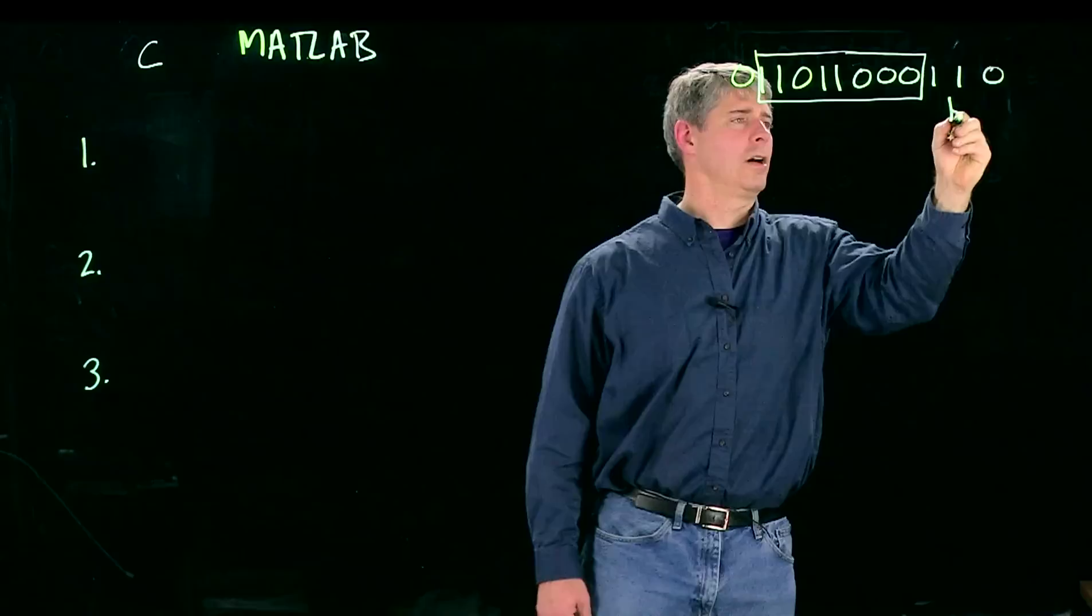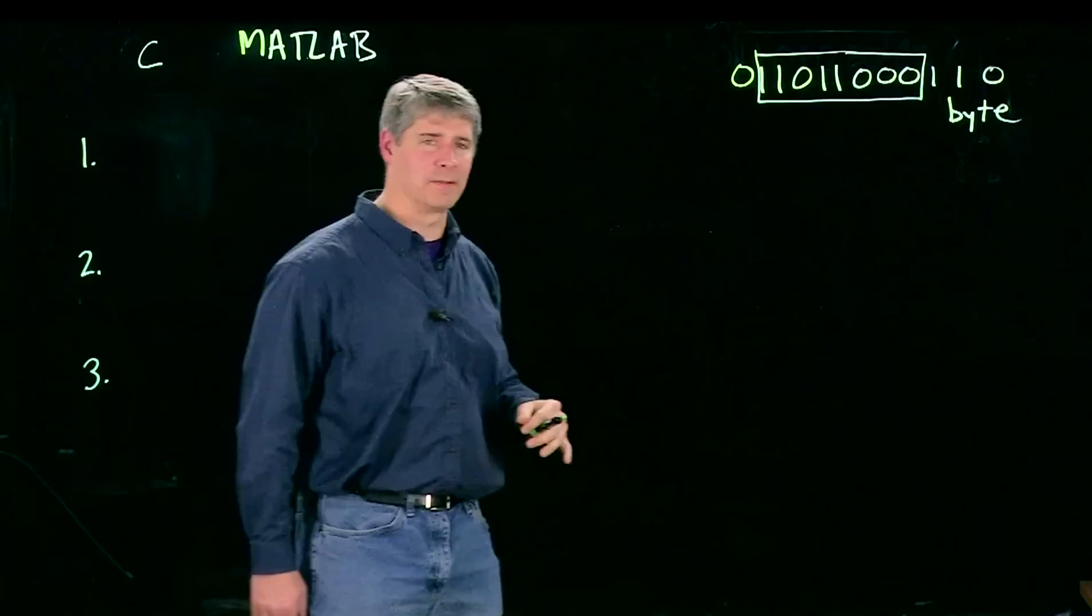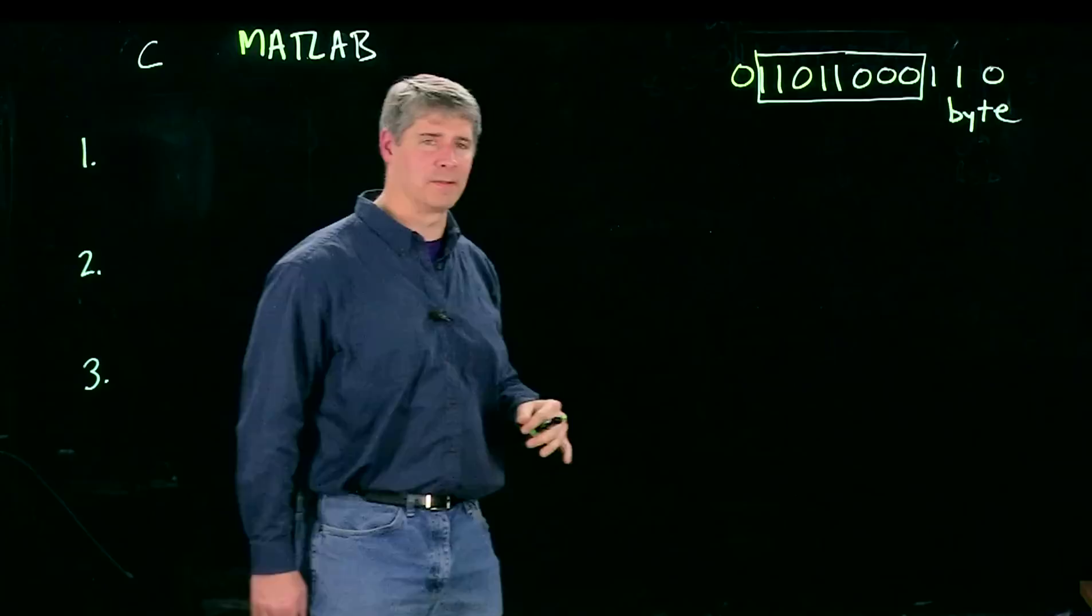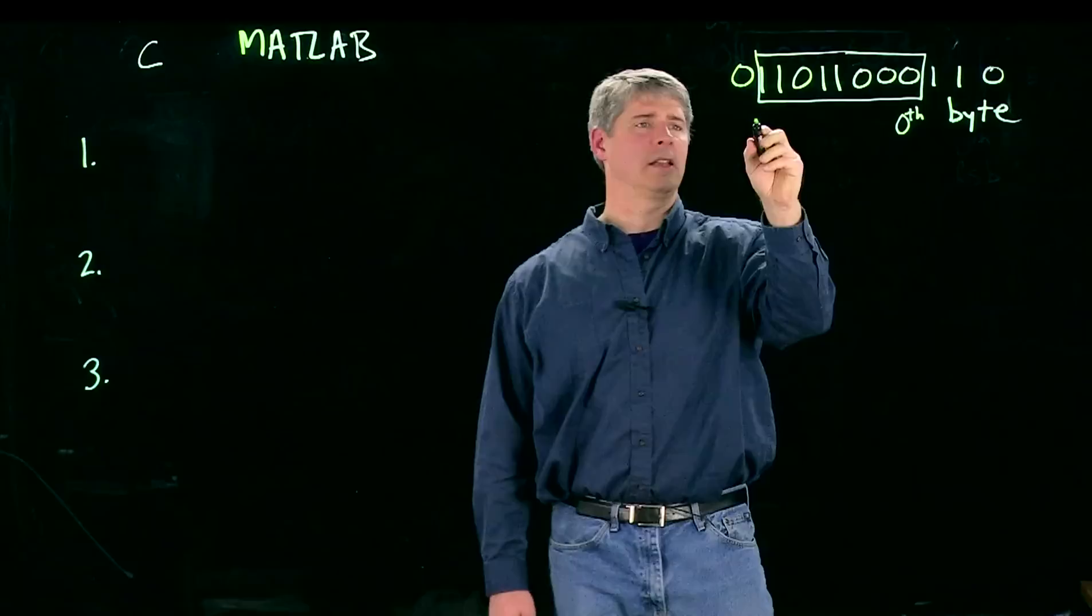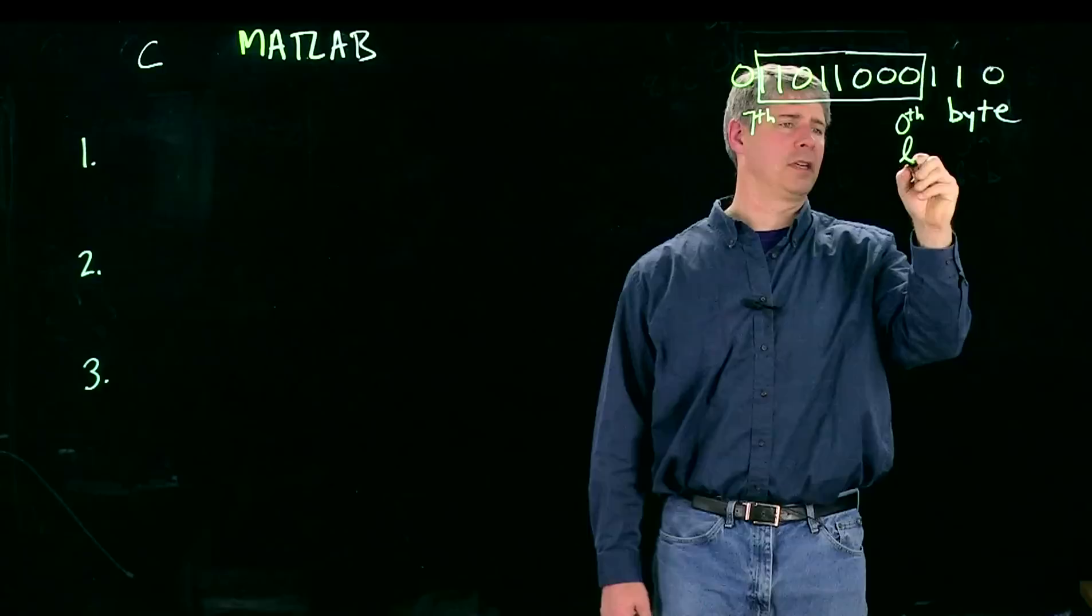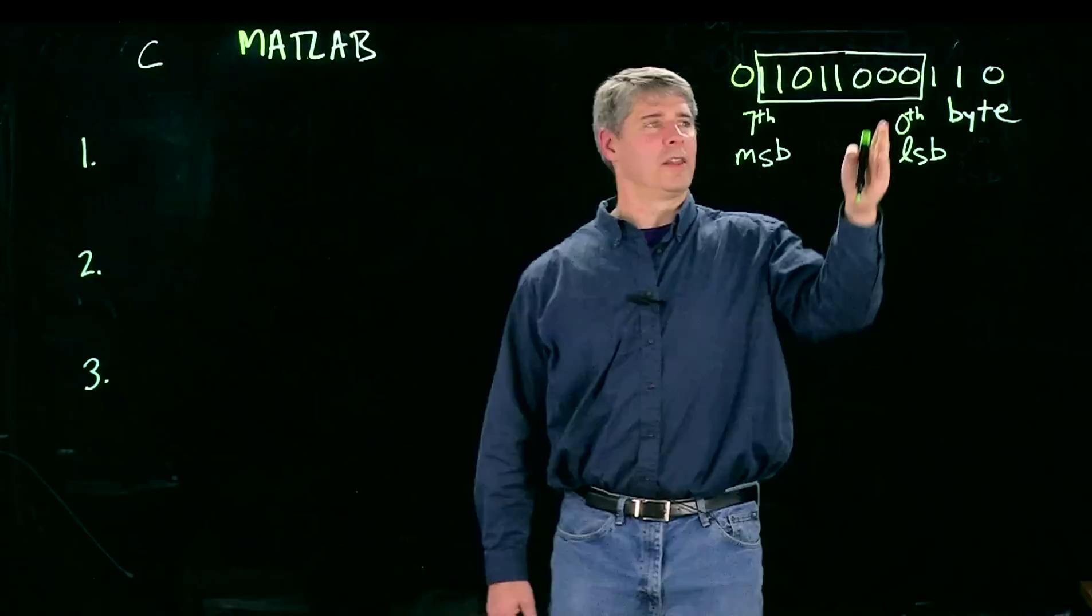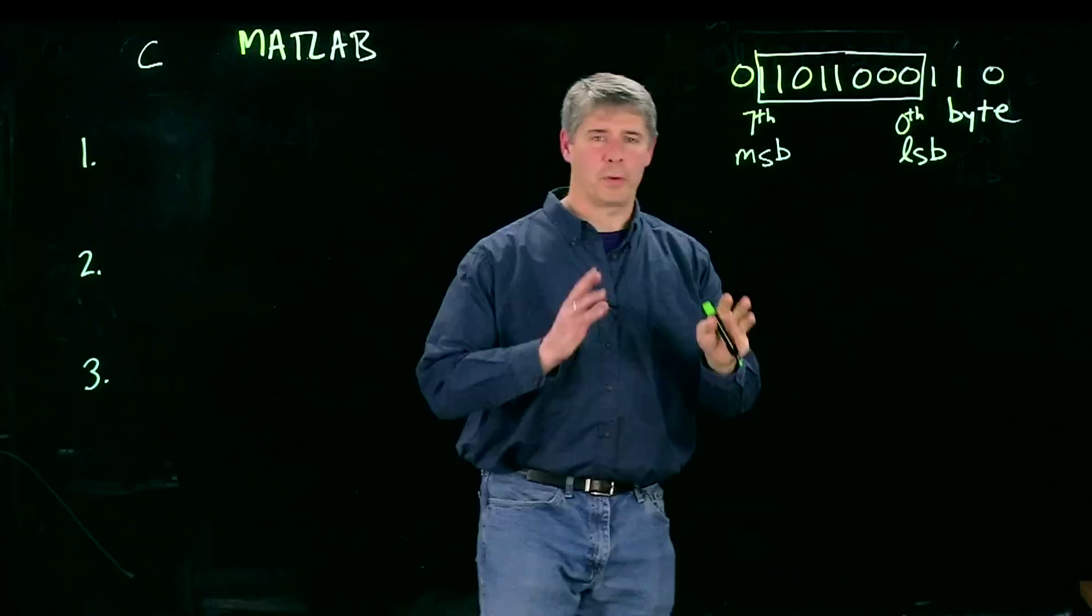And these eight together are called a byte. For instance, your laptop might have eight gigabytes of RAM. I'm going to call the rightmost bit the zeroth bit of the byte, and the leftmost is the seventh bit. The zeroth bit is also called the least significant bit, and the seventh is called the most significant bit. This makes sense because if you're thinking about a base 10 number, for example, the number in the right column is less significant than the number in the left column.